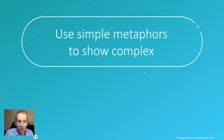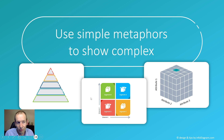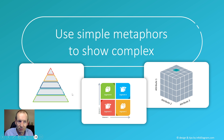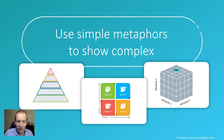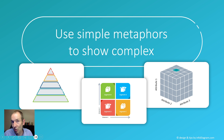Some examples: if you want to show a one-dimensional dependency, you can use a pyramid or a visual representation of levels — it could be a timeline or some layers. For two dimensions, there are all these quadrant diagrams. For three dimensions, the cube is a good metaphor.